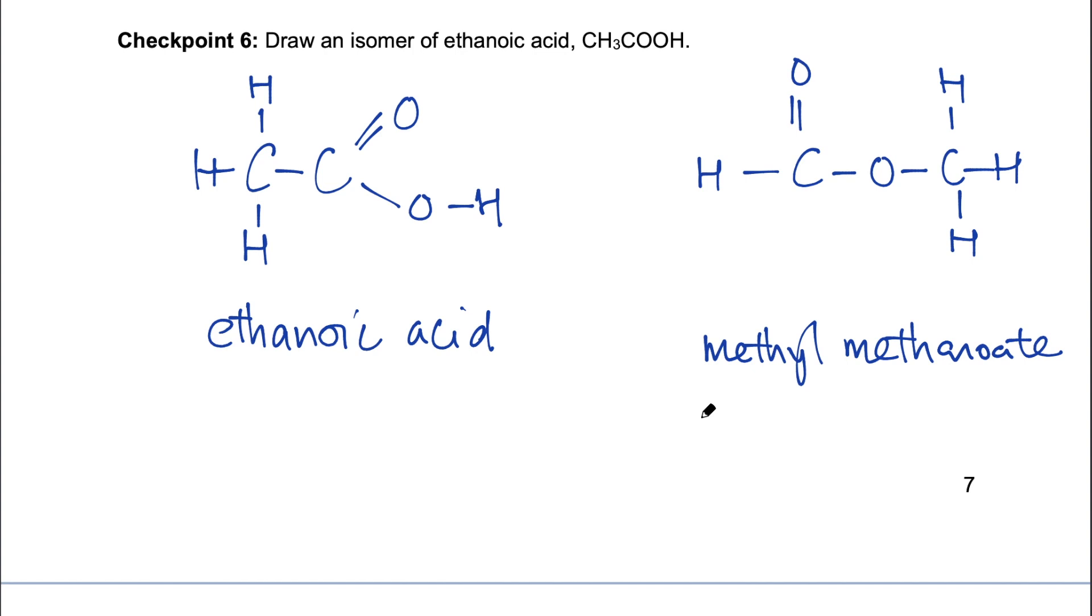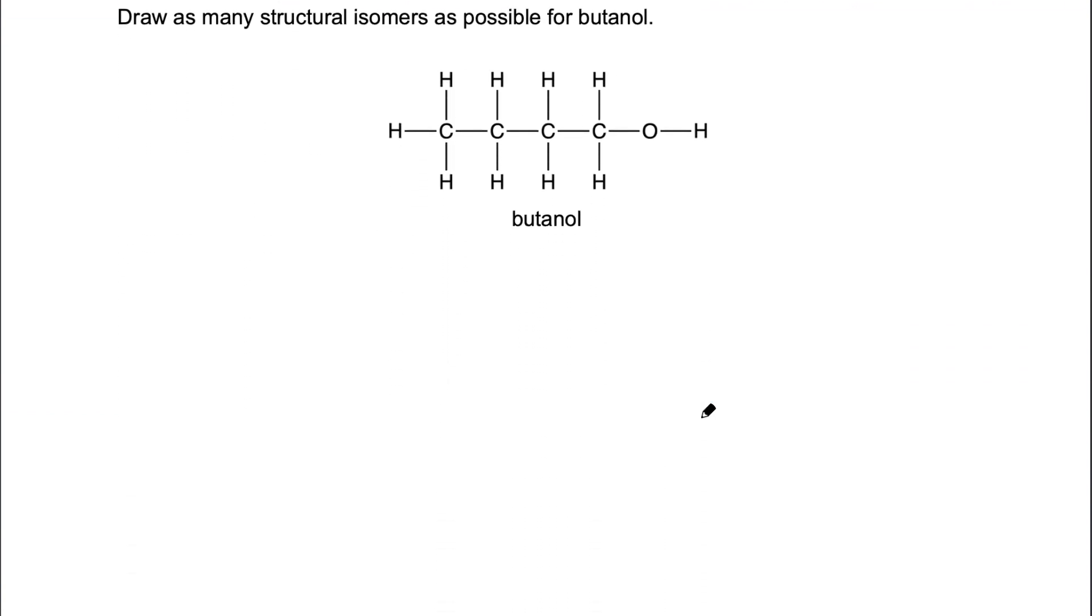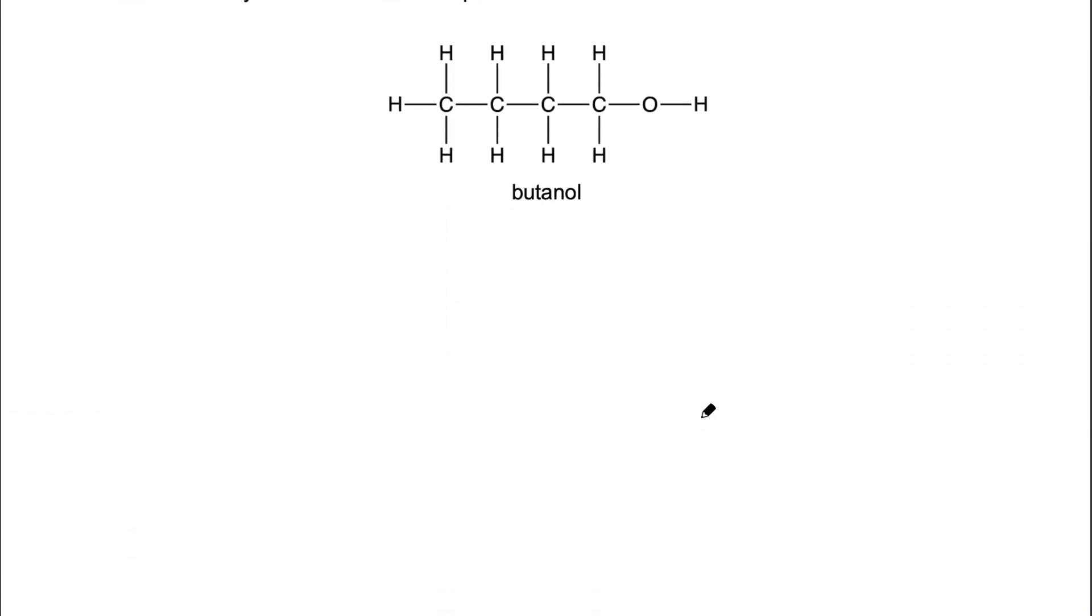So now I hope you have a better idea of the different kinds of isomerism. Now I have one final challenge for you. Butanol can exhibit all three kinds, chain isomerism, functional group isomerism, and positional isomerism. And I'd like to challenge you to draw as many isomers as you can think of for butanol.